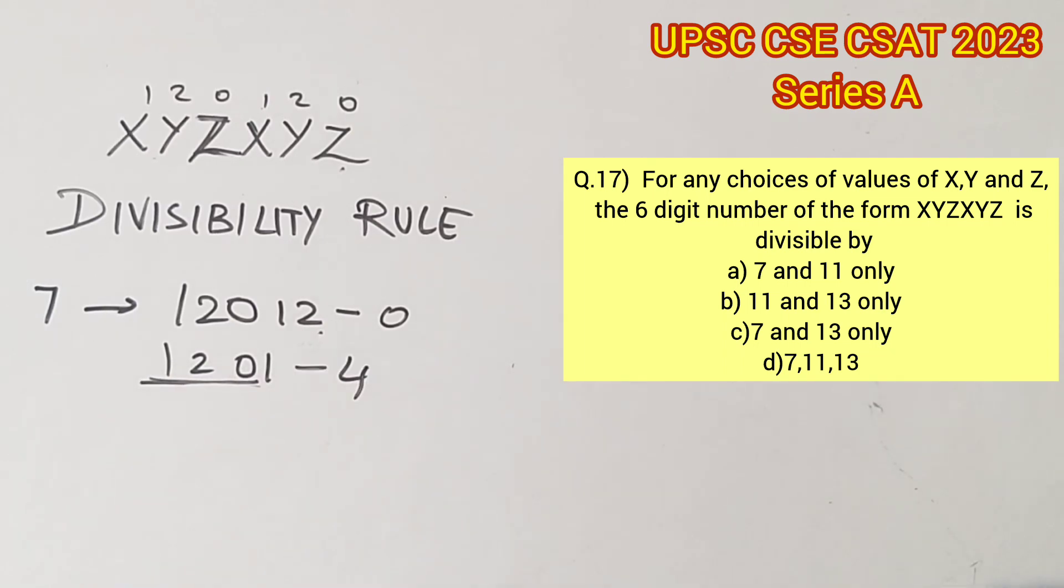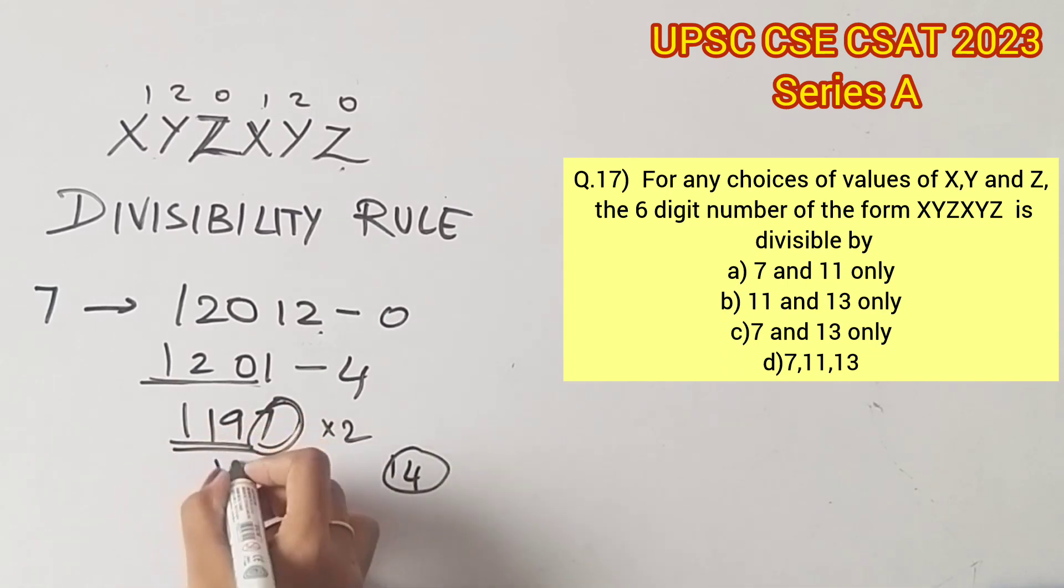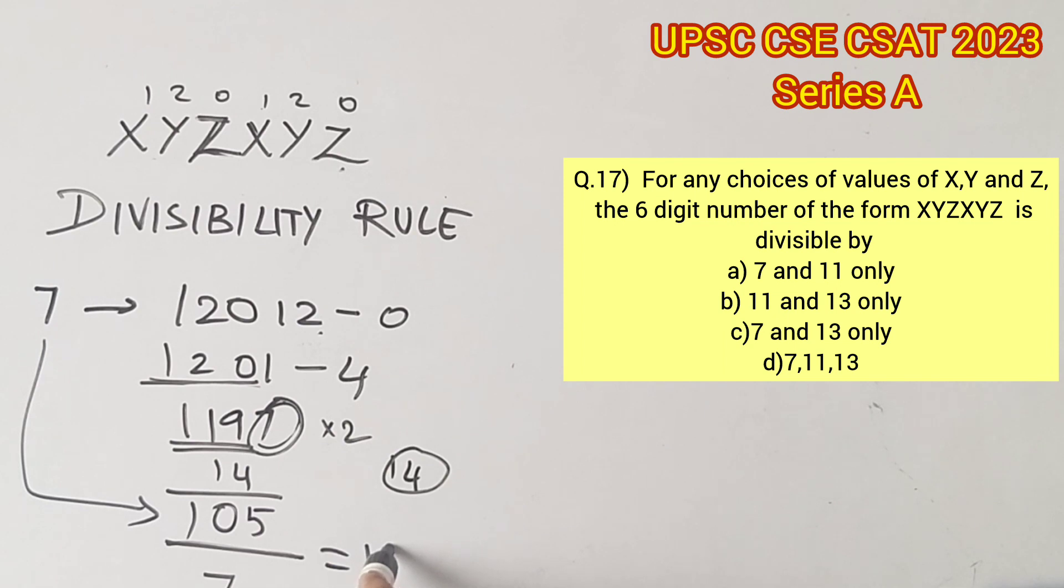Repeating this process once again, the last digit 7 is multiplied with 2, that gives us 14. So we have to subtract 14 from the remaining digits 119. 119 minus 14 would give us 105. We know that 105 is divisible by 7. 105 divided by 7 gives us 15.